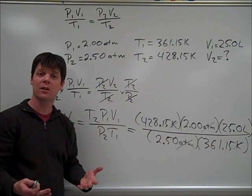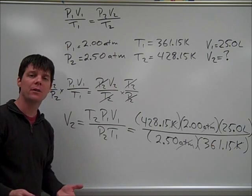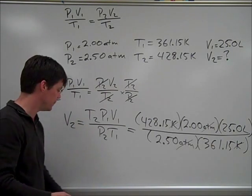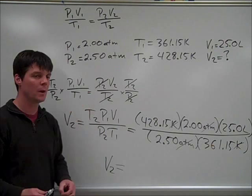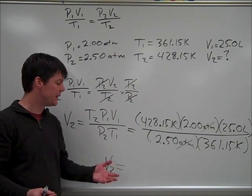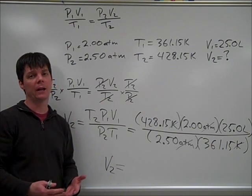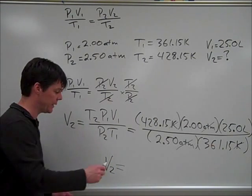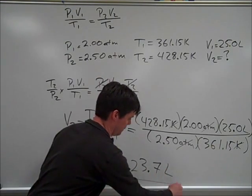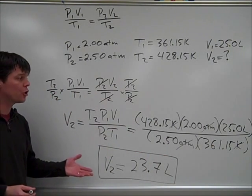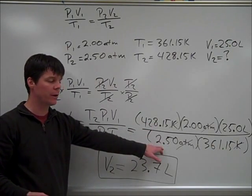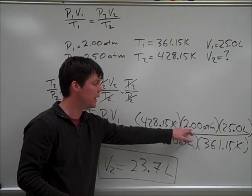The final step is to plug the numbers into the calculator and evaluate. We find that this problem yields an answer of 23.7 liters. Our final answer should have three significant figures, and we are finding three significant digits here, here, and here.